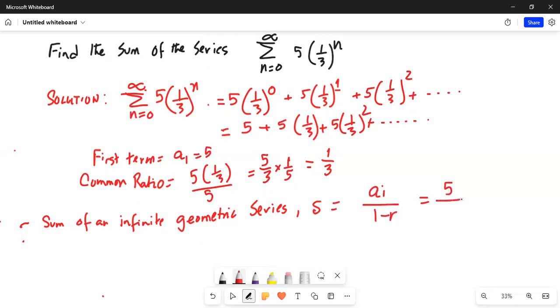Which can be simplified in the denominator. 1 can be written as 3 divided by 3 minus 1 third.